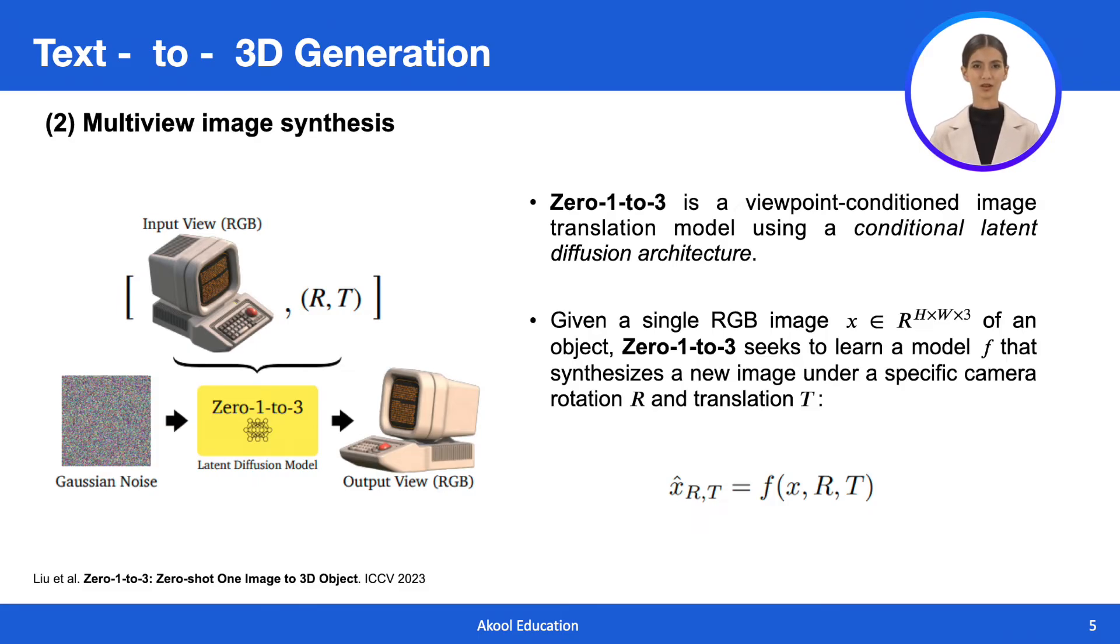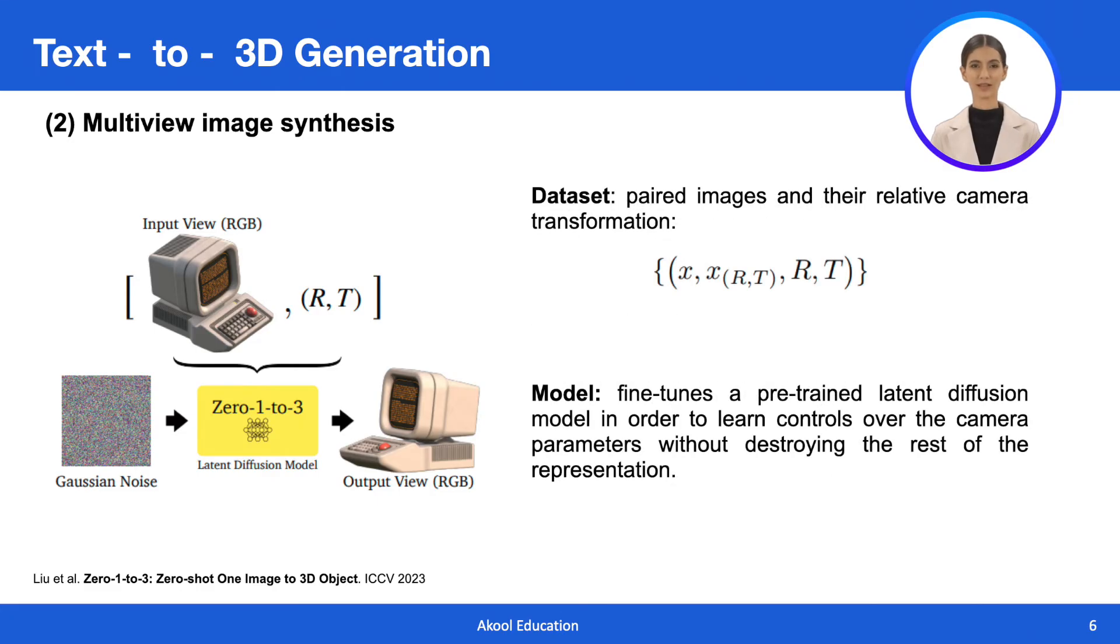In mathematical terms, given an image X and the relative camera rotation R and translation T for the desired viewpoint, the model aims to learn a function that synthesizes a new image under the specified camera rotation R and translation T. Given a dataset of paired images and their relative camera extrinsics, Zero-1-to-3 fine-tunes a pre-trained diffusion model in order to learn controls over the camera parameters without destroying the rest of the representation.